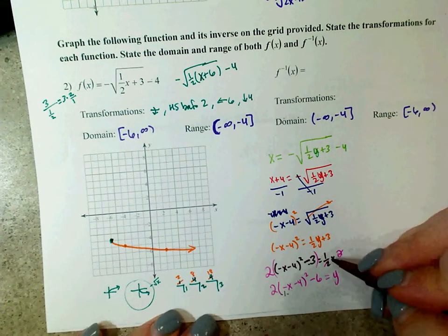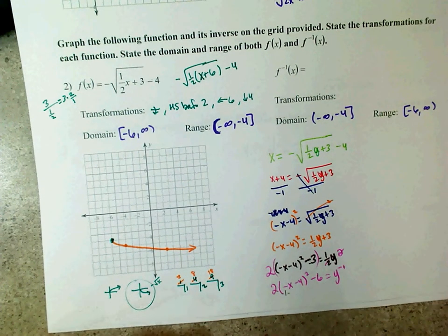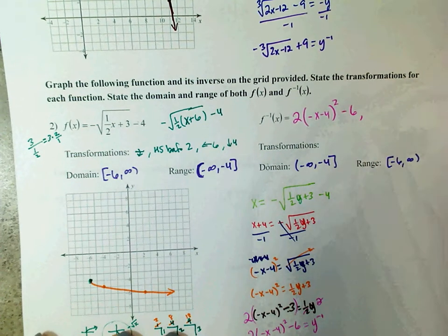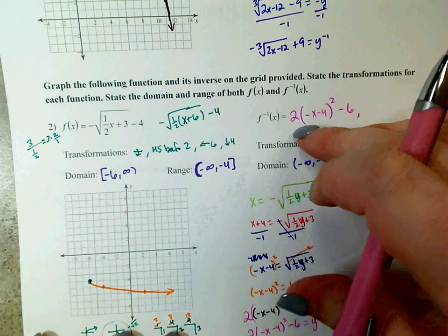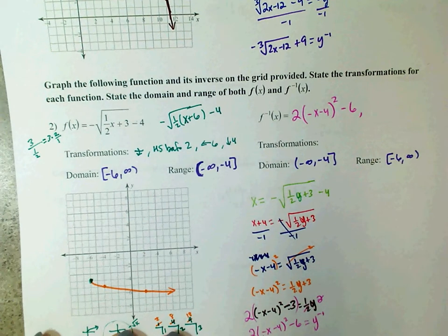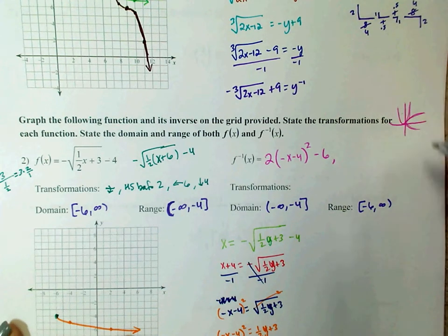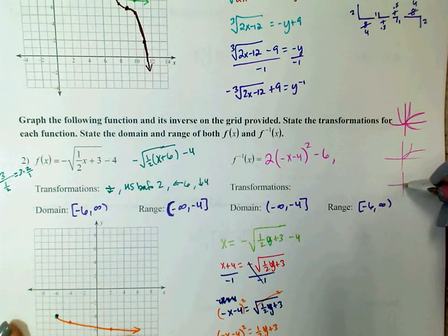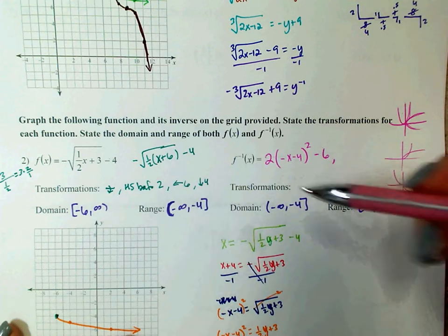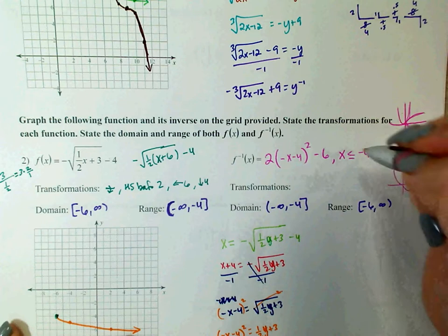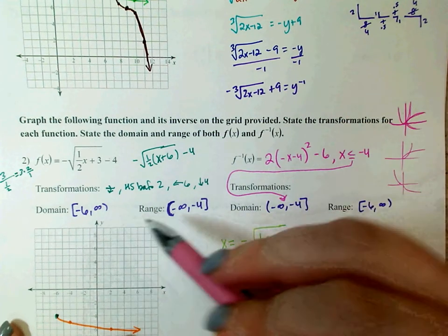So the inverse is 2 times (negative x minus 4) squared minus 6. But that right there is a full parabola, and I cannot have a full parabola being the inverse of just a square root — I have to think about which side it is. The inverse of a right-hand side of a parabola is the positive (top) square root, but the inverse of the left-hand side is the negative square root. So if I start with a negative square root, I end up with the left side of the parabola.